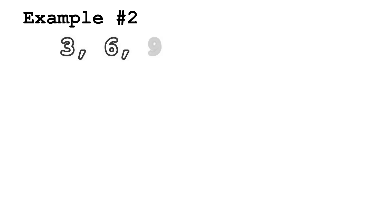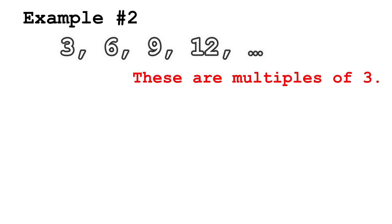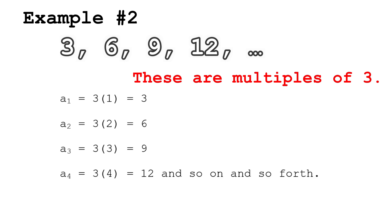Let us try another example. The sequence 3, 6, 9, 12, and so on are multiples of 3. The first term is 3, the second term is 6, the third term is 9, and the fourth term is 12. We can rewrite the first term as 3×1, the second term as 3×2, the third term as 3×3, and the fourth term as 3×4. Just like the first example, we can therefore conclude that a(n) is equal to 3n.